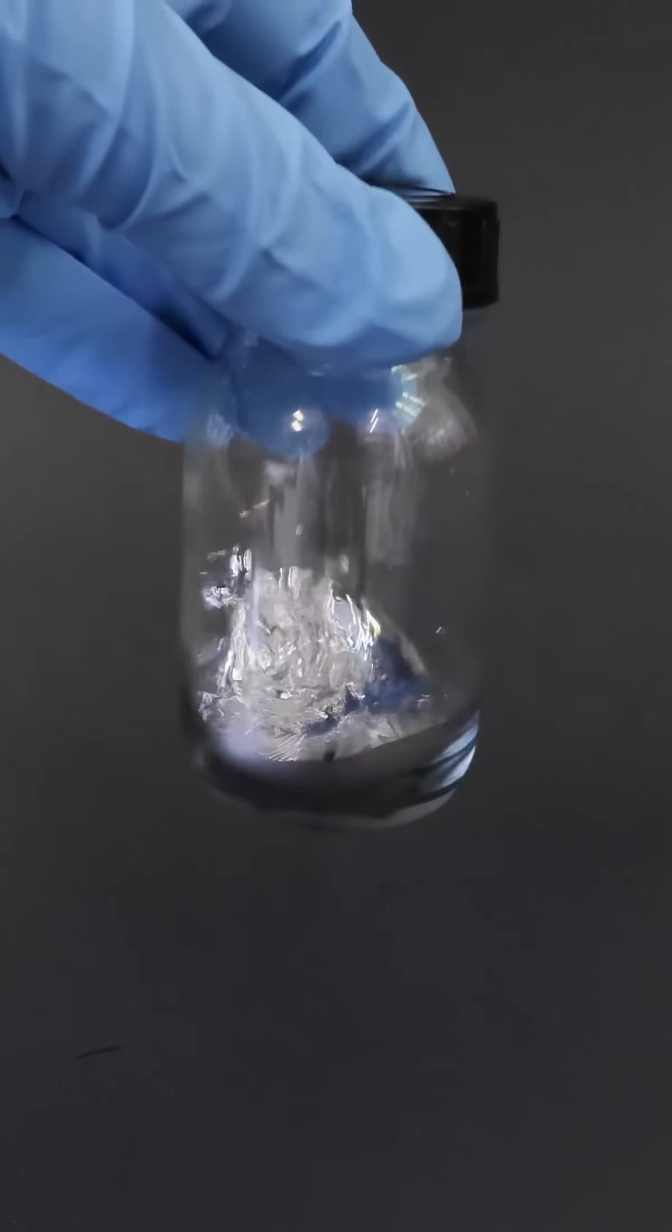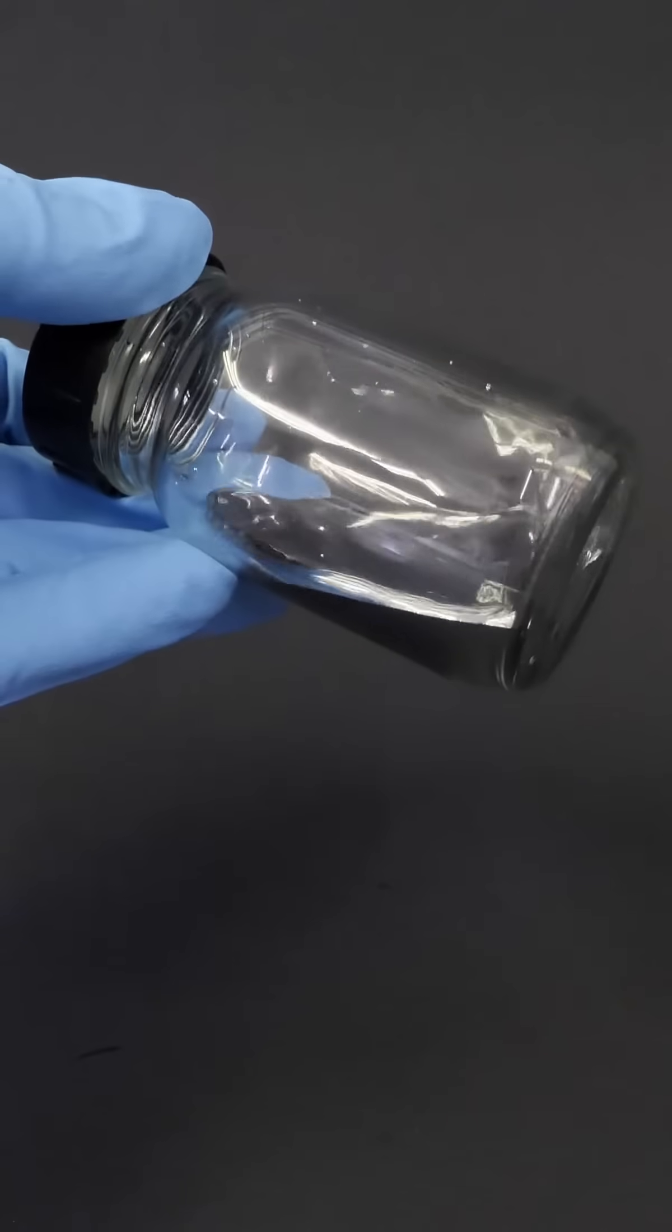This is mercury, the only metal that's liquid at room temperature. It remains liquid all the way down to minus 39 degrees Celsius.